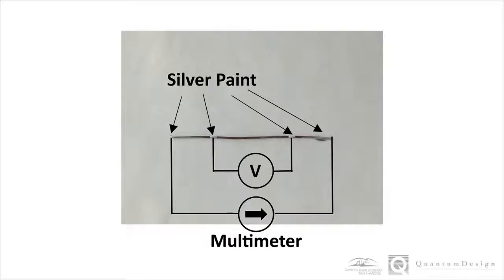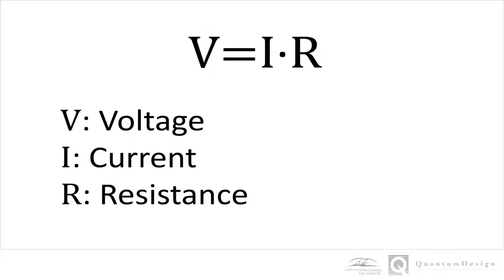We applied a known current to the material, and we isolated the voltage input contacts from the path of the current. There is certainly contact resistance at the voltage input, but that becomes part of the high impedance of the voltmeter anyway. As a result, the voltage drop that we measure is primarily restricted to the sample. Applying Ohm's law, V equals IR, allows us to determine the resistance.